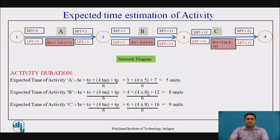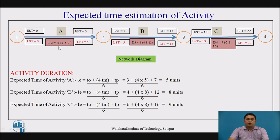For expected time estimation of the activities, using the formula seen earlier, for activities A, B, and C, the three time estimates are 3, 5, 7 respectively — where 3 is the optimistic time, 5 is the most likely time, and 7 is the pessimistic time. The expected time values obtained are 5, 8, and 9 for each activity. With these expected times, we calculate the project duration.